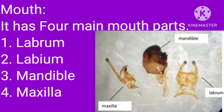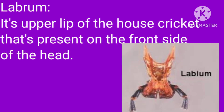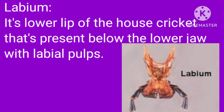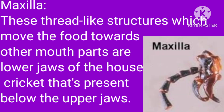The mouth has four main parts: labrum, labium, mandible, and maxilla. Labrum is the upper lip of the house cricket, present on the front side of the head. Labium is the lower lip, present below the lower jaw with labial palps. Mandibles are strong structures that cut and chew food — they are the upper jaws, present below the upper lip. Maxillae are thread-like structures that move food toward other mouth parts — they are the lower jaws, present below the upper jaw.